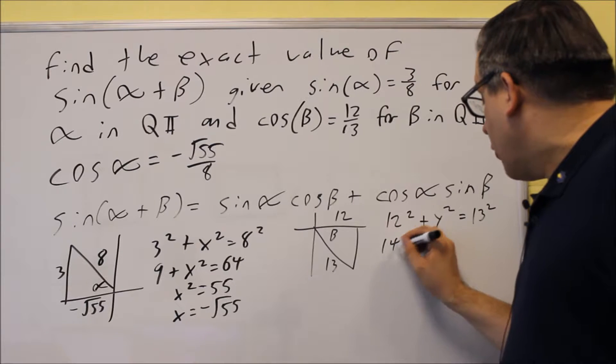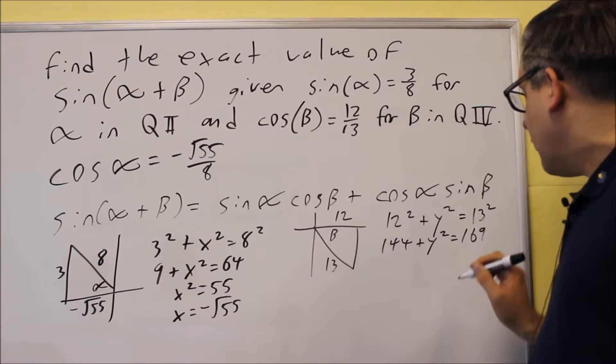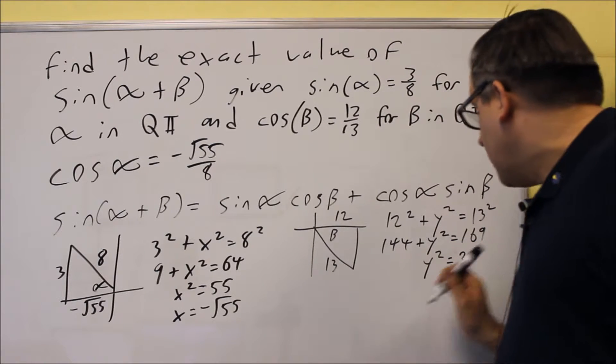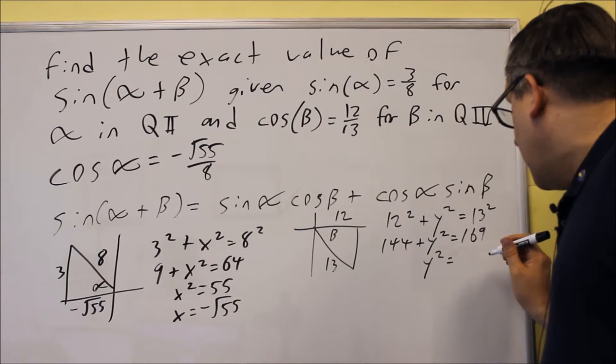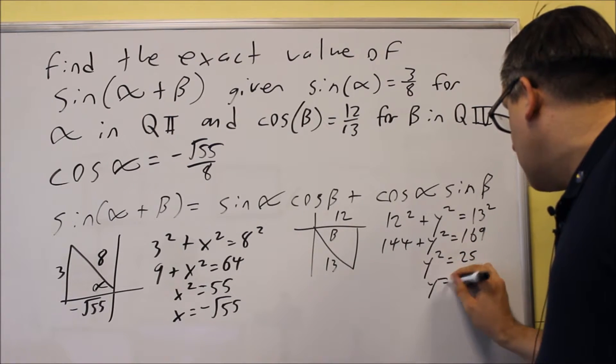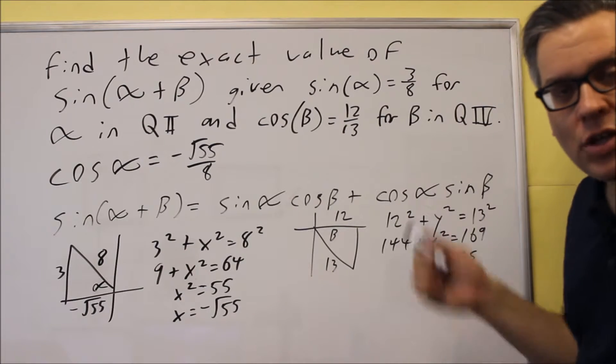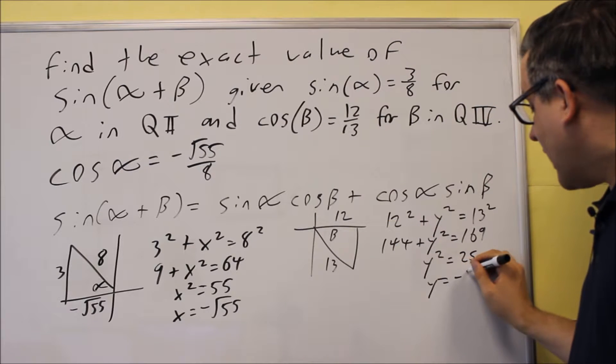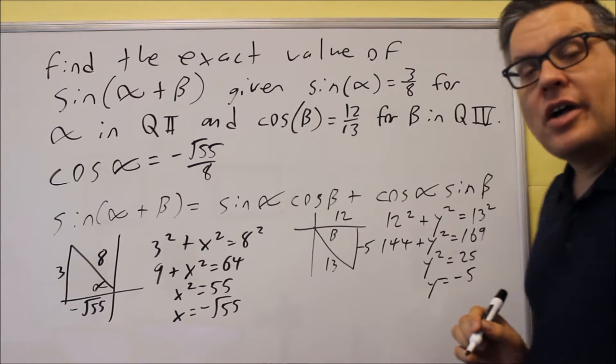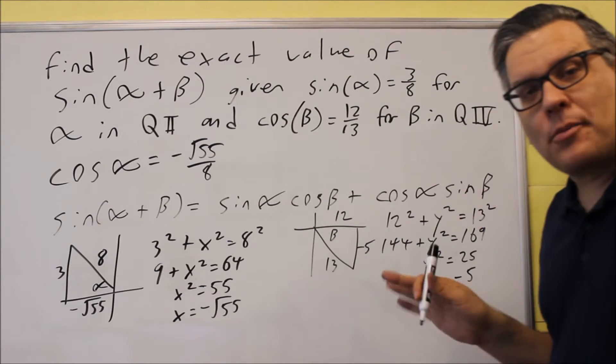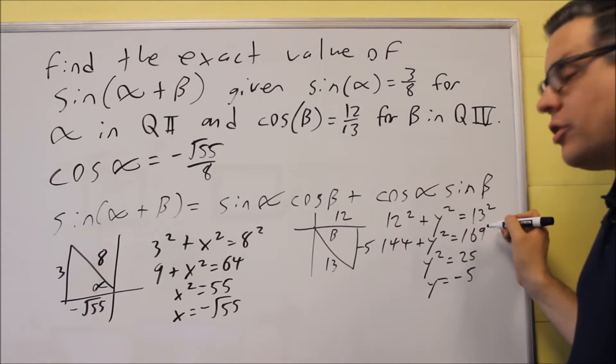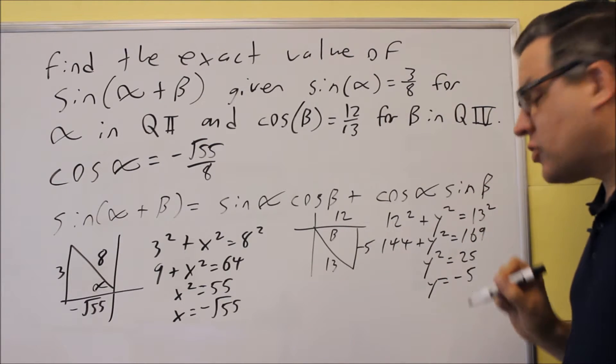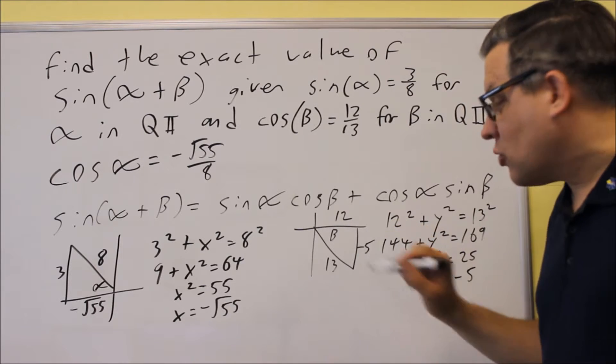And we get 144 plus y squared equals 169. If we subtract that, we get 25 for that. And then once we square root both sides, we get plus or minus. Now, again, be careful what quadrant you're in. You're in fourth quadrant. This y value here has to be negative. So we're going to put negative 5 for that one. So that's the most important thing when you do these kind of problems. Make sure you get your signs correct when you do that. So, again, you get 25. But when you square root both sides, you get plus or minus 5. We're purposely choosing negative 5 because of where it's at in that quadrant.